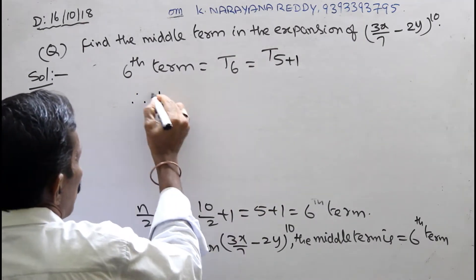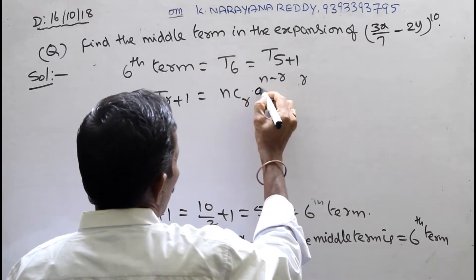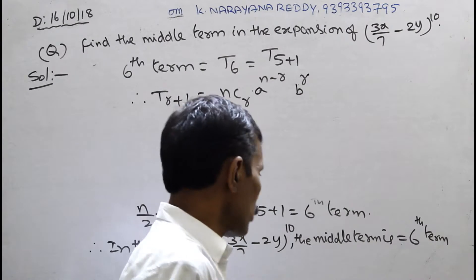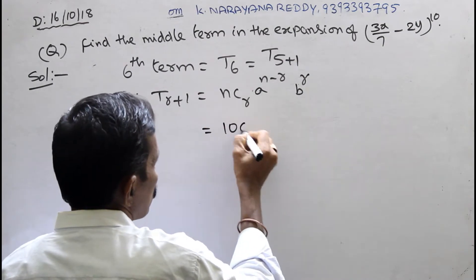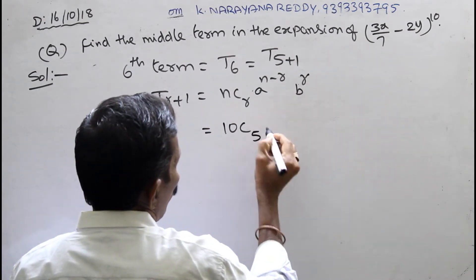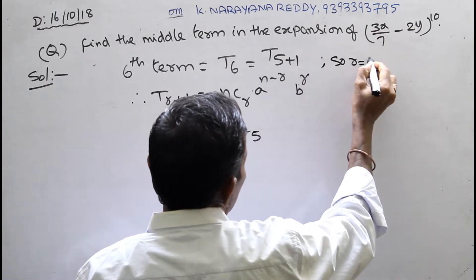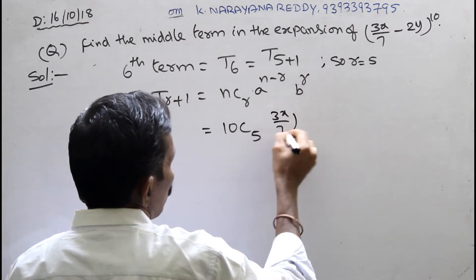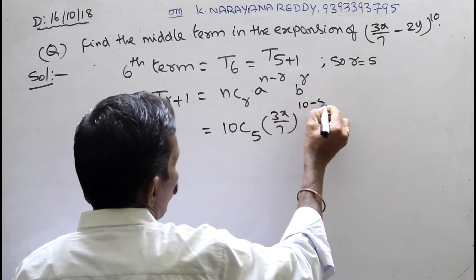Therefore, T(5+1) = nCr formula applied with n = 10, R = 5. Why R = 5? Because for T(R+1), R = 5. So we write: T(5+1) = 10C5 · a^(n−R) · b^R = 10C5 · (3x/7)^(10−5) · (2y)^5.